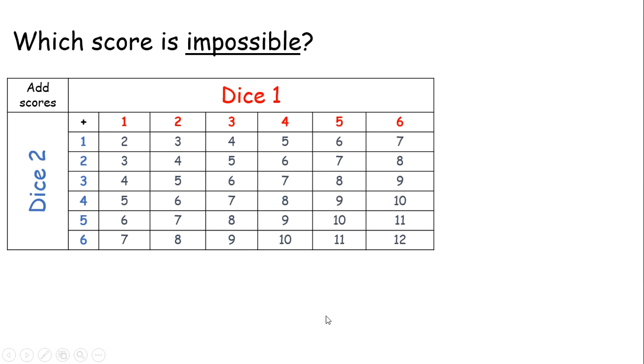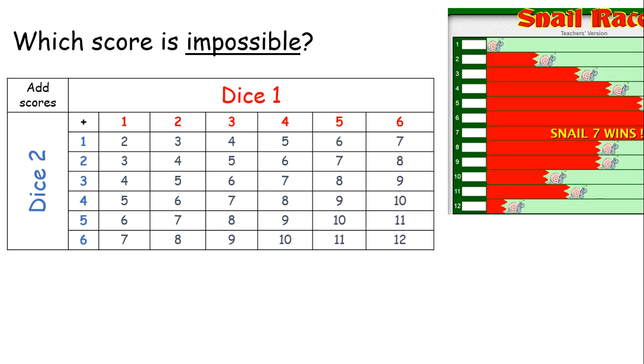The last thing I'm going to ask is which score is impossible. So, just pause the video and see if you can work out which score is impossible. Okay, so looking down our list of snail races on the right, we can see there are snails numbered 1 to 12. So, number 1 is the only score that's impossible.